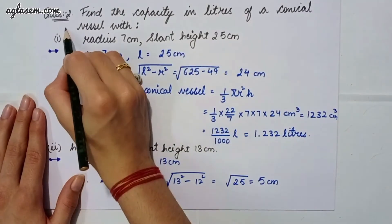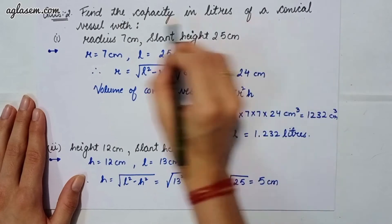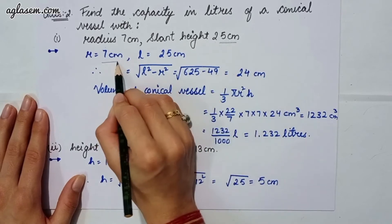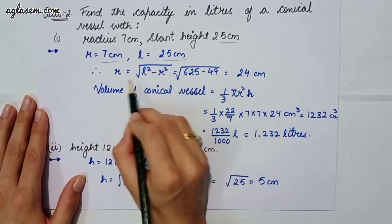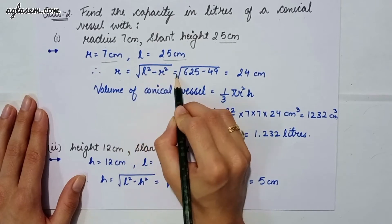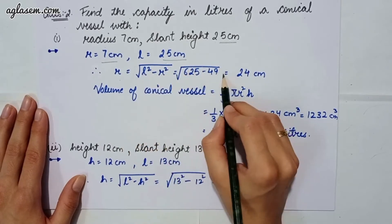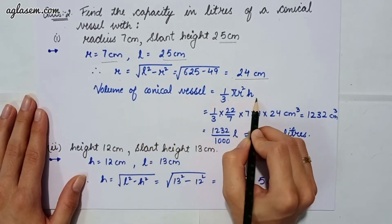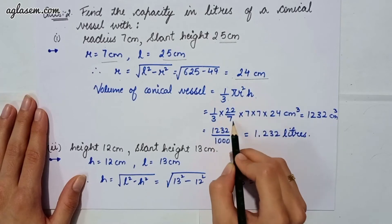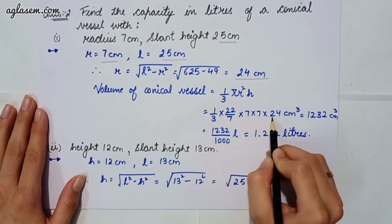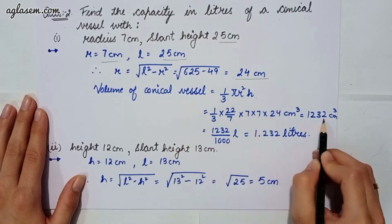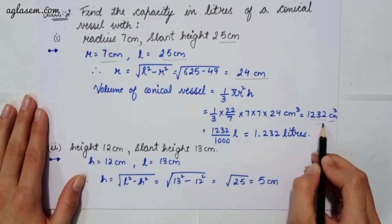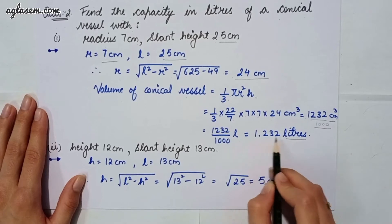Moving to our second question, which says: find the capacity in liters of a conical vessel with radius 7 cm and slant height 25 cm. Radius is given and slant height is given. So height h = √(l² − r²) = √(625 − 49) = 24 cm. Volume of conical vessel = 1/3 × 22/7 × 7 × 7 × 24 = 1232 cm³. Converting to liters by dividing by 1000, the answer is 1.232 liters.